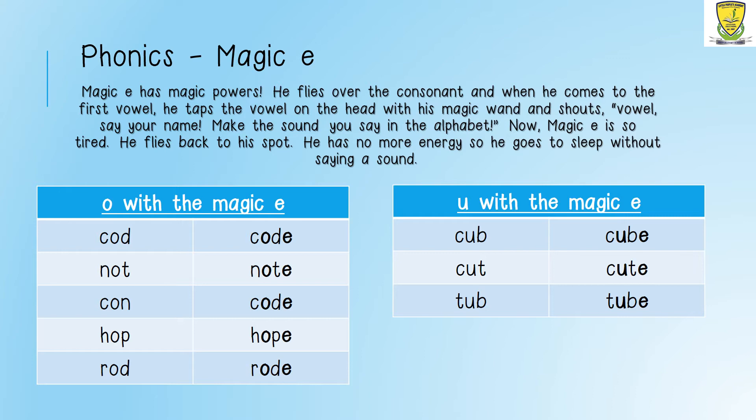And now the last word is 'tub': T-U-B, tub. If I add a magic E at the end of that word, my U becomes a U. So my word is now going to be T-U-B-E, tube. T-U-B-E, tube. Good job.